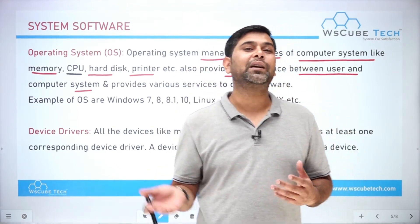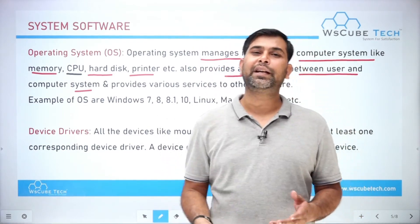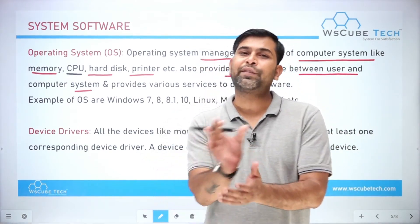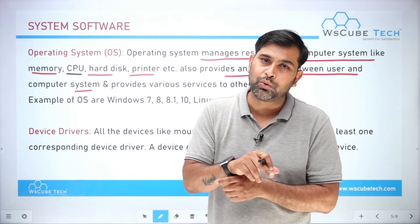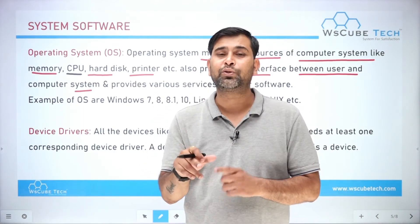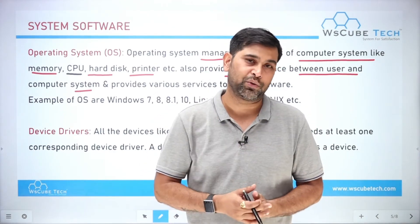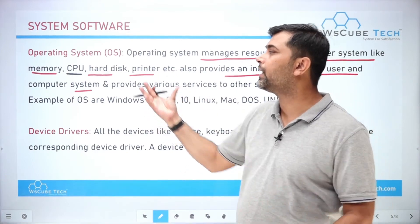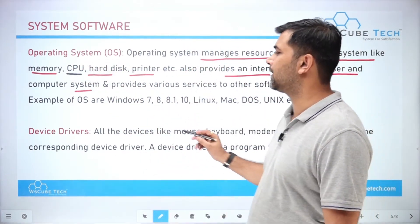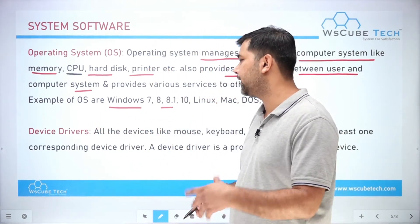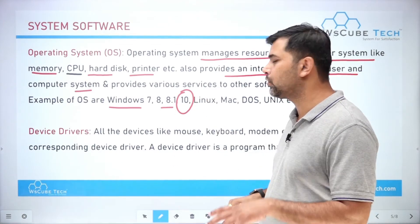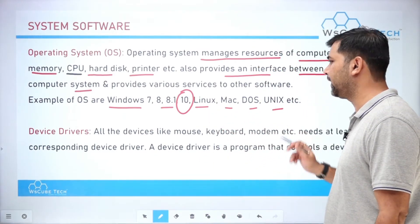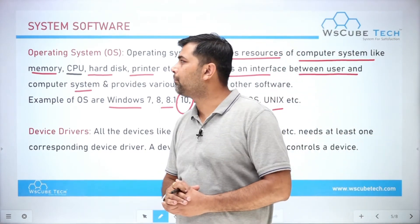For example, when I try to save a file and the computer says the file name already exists, and asks whether I want to overwrite or rename it — that is communication happening between me and the computer. The operating system acts as that interface. Examples of operating systems include Windows 7, Windows 8, Windows 8.1, Windows 10, Linux, Macintosh, DOS, and Unix.